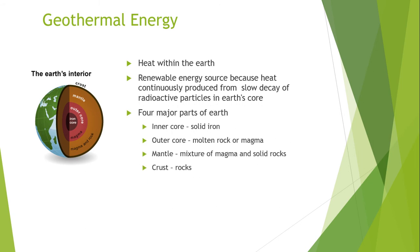The earth consists of four major parts: the inner core, outer core, mantle, and crust. The earth's inner core is the innermost geological layer and is primarily known to be a solid ball. It is believed to have a radius of 1220 kilometers, which is about 760 miles, and it composes about 20 percent of earth's radius or 70 percent of the moon's radius. The outer core is composed of molten rock or magma.